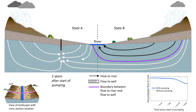Now, after about 2 years, the system has nearly reached steady state under pumping conditions, meaning that flow paths and flow to the river are no longer changing very much with time. Recall that in other aquifers, the timing of the changes in flow, the time to reach steady state, and the decrease in flow to the river could vary greatly from what has been shown here.